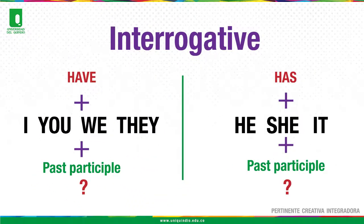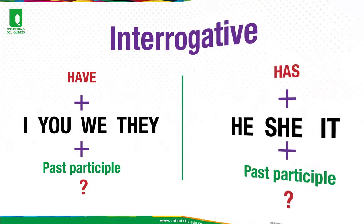Interrogative form: Auxiliary 'have' plus the subjects I, you, we, they plus past participle and question mark. Third person: auxiliary 'has' plus he, she, or it plus past participle and question mark.